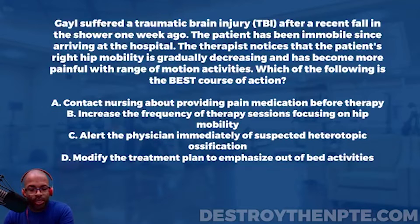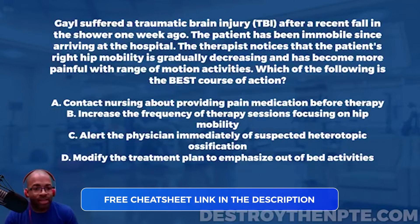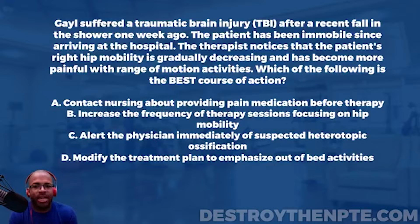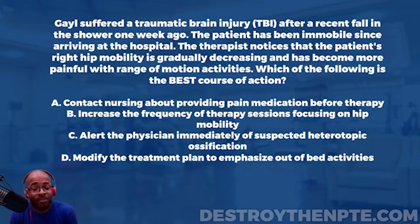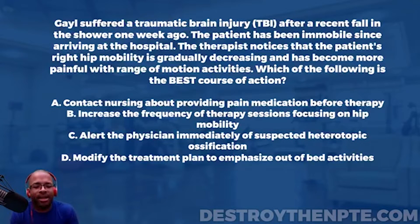For this week's Challenge Wednesday, we have our patient Gail. Gail suffered a traumatic brain injury (TBI) after a recent fall in the shower one week ago. The patient has been immobile since arriving at the hospital. The therapist notices that the patient's right hip mobility is gradually decreasing and has become painful with range of motion activities. Which of the following is the best course of action? A: contact nursing about providing pain medication before therapy; B: increase the frequency of therapy sessions focusing on hip mobility; C: alert the physician immediately of suspected heterotopic ossification; D: modify the treatment plan to emphasize out of bed activities.